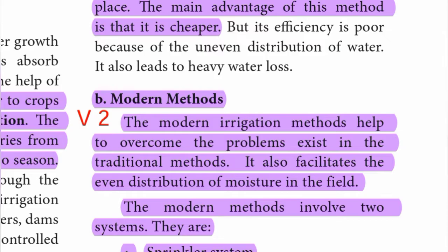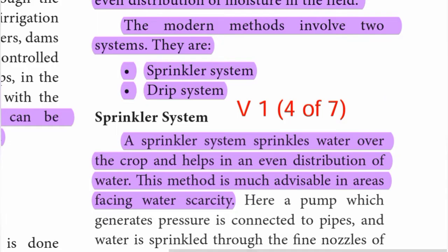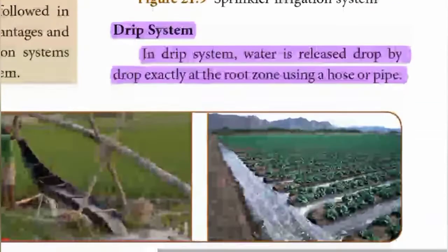Modern methods: The modern irrigation methods help to overcome the problems that exist in the traditional methods. It also facilitates the even distribution of moisture in the field. The modern method involves two systems: sprinkler system and drip system. The sprinkler system sprinkles water over the crop and helps in an even distribution of water. This method is much advisable in areas facing water scarcity.